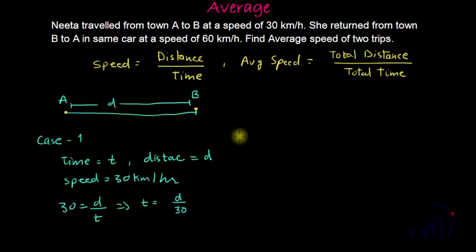And if we talk about case 2, in case 2 distance is same because she is returning from town B to town A so distance will be same as D and speed has actually doubled. It is 60 kilometers per hour.